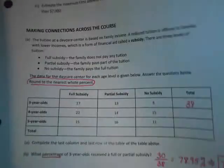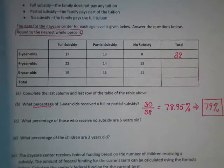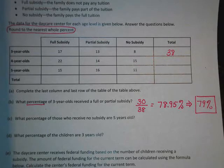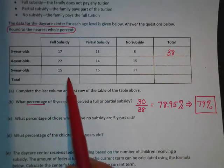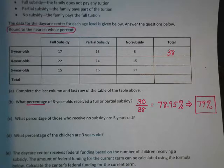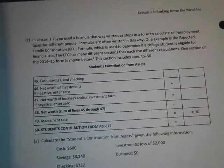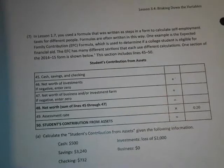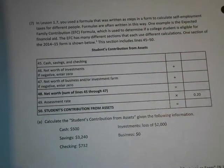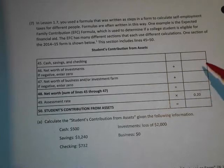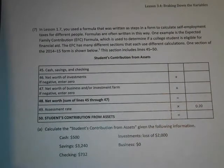Make sure you add up the columns and rows for part A. Number seven is a review of taxes — just follow the chart. I don't think anyone had trouble with those when we did them in class.